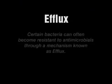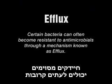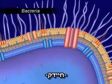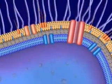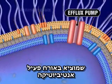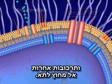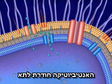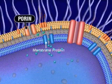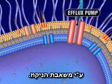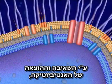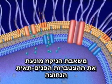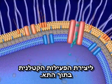Efflux. Certain bacteria can often become resistant to antimicrobials through a mechanism known as efflux. An efflux pump is essentially a channel that actively exports antimicrobial and other compounds out of the cell. The antimicrobial enters the bacterium through a channel termed a porin and then is pumped back out by the efflux pump. By actively pumping out antimicrobials, the efflux pumps prevent the intracellular accumulation necessary to exert their lethal activity inside the cell.